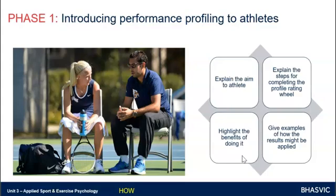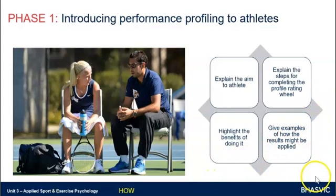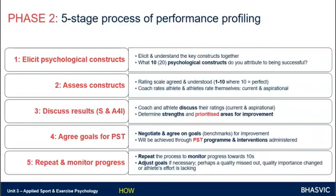You need to clarify to them: if we do this process together, there are benefits to you — and highlight what those benefits are. If they can see an outcome and how the results of this process apply to them, there's a huge chance they're going to engage with it. So phase one is basically explaining everything: explain the aim, process, benefits, and results. Remember those four things. Hopefully at this point your athlete has bought into this process, and this is where you actually start doing performance profiling.